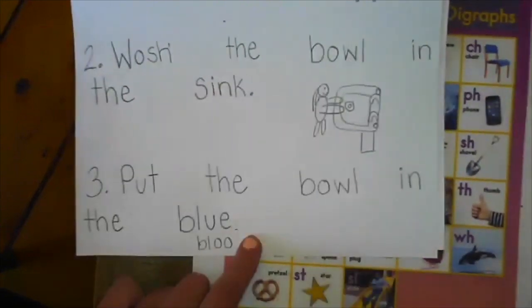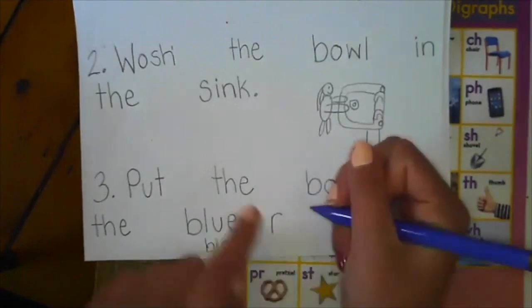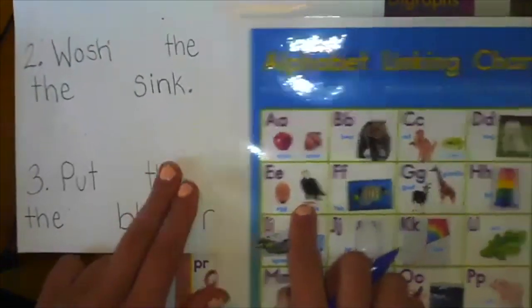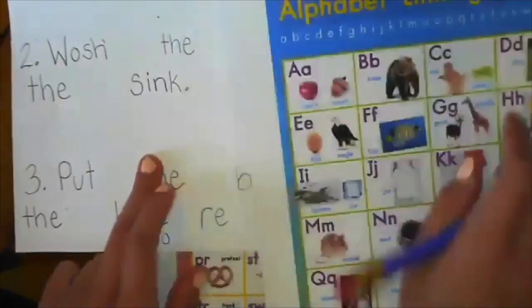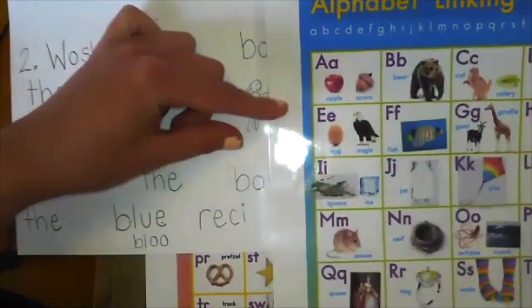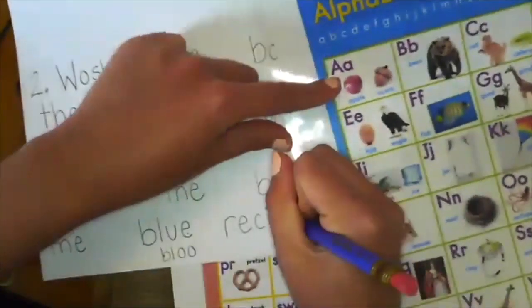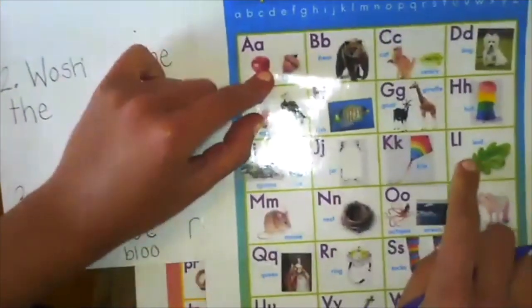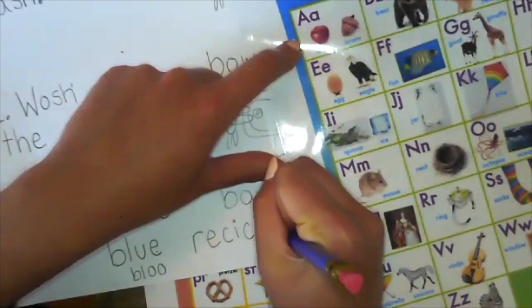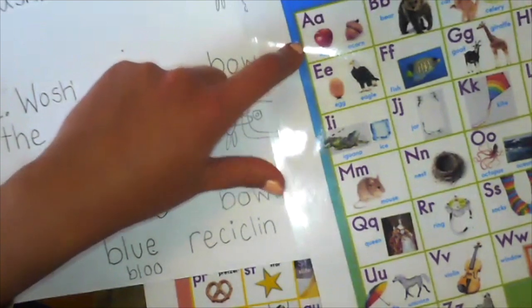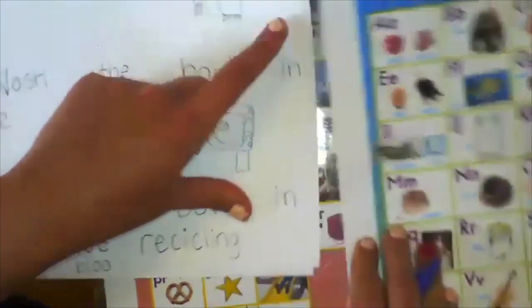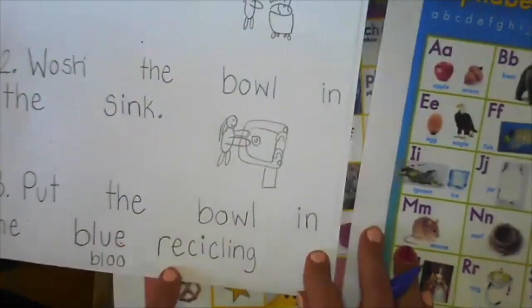In the blue recycling bin. R-E-E-E-Eagle. Long E. Recess-S-S-S. Recess-I-ice. Long I. Recycling-K or C-cat. Recycle L-leaf. Recycling. Oh I hear an in. I-N spells in. A sight word hidden inside a big word. Recycling. G-goat.